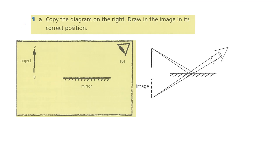Question 1a: Copy the diagram and draw the image in its correct position. In your book there is a diagram showing an object, a mirror, and an eye. When you look at the mirror, you see the object. We said the image always forms behind the mirror. The object sends a ray to the mirror — this is the incident ray — and the mirror reflects it — this is the reflected ray. By drawing two such rays and extending them behind the mirror, the two lines will meet at a point: that is the image.